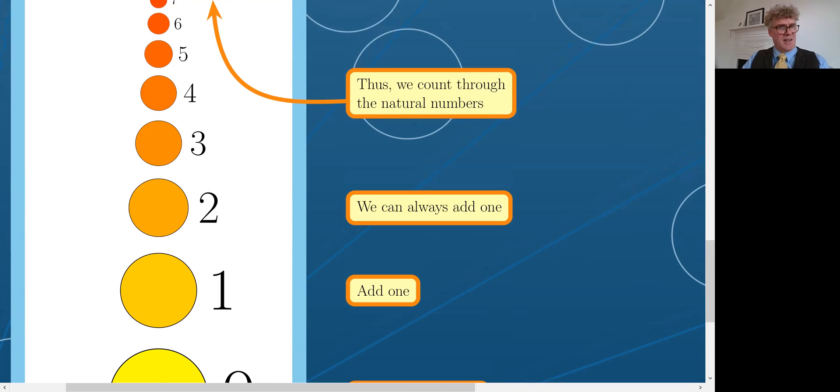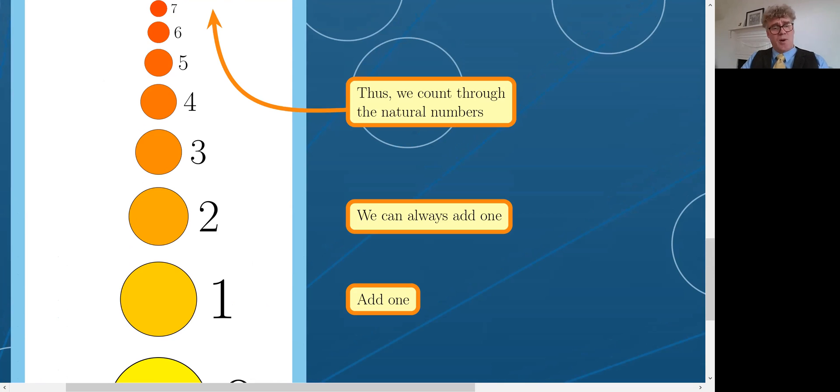But wait a minute because I said that we're going to be counting to infinity and someone might object. How would there be any time left to get to infinity or anything after infinity if we use all of our time counting through the finite numbers?